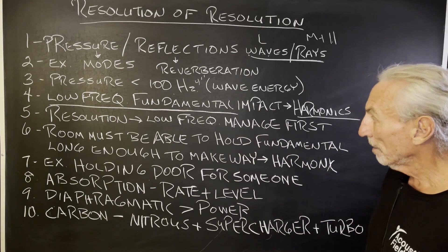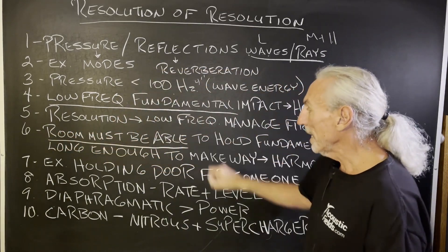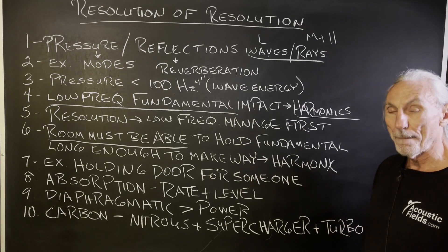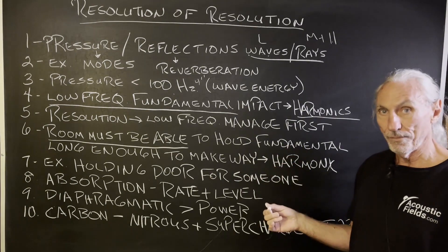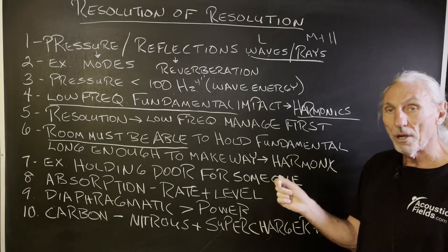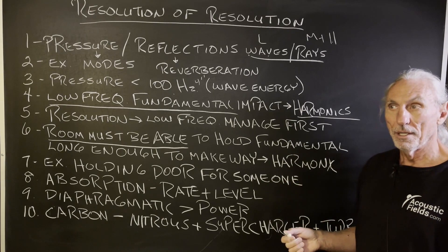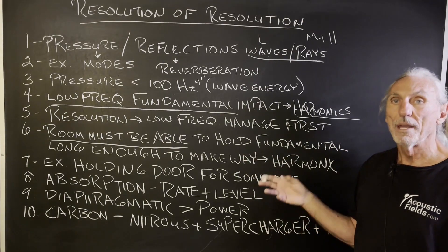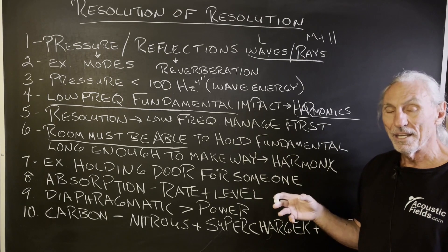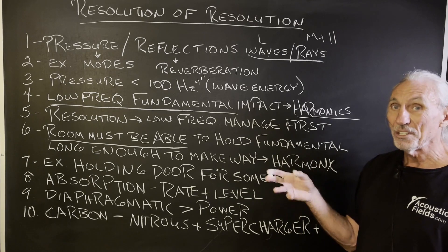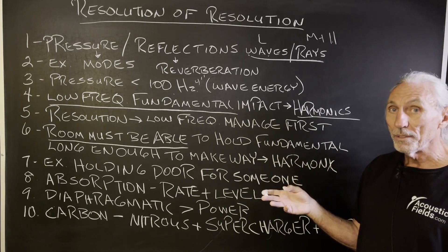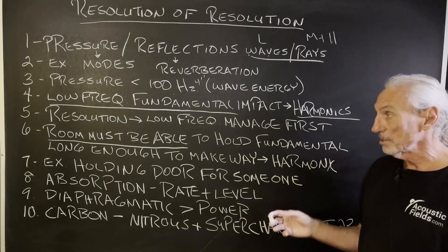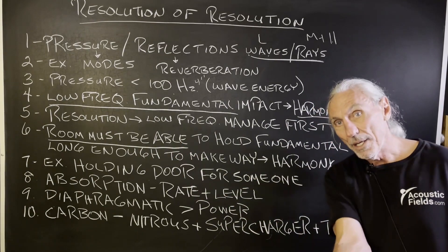The room must be able to hold the fundamental — the 30, 40, 50, 60 — long enough to make way for the harmonic. So many rooms, when 30, 40, 50, 60, 70 cycle energy gets dumped into them, it's like a car crash or explosion — they hold on to that energy for just a brief period of time, and then it produces distortion. The goal is to hold on to the fundamental as long as it can. The factors that contribute: the dimensions and the treatment. You fill a room full of foam, you have no low frequency management. You fill a room full of diaphragmatic absorption, you'll have a lot of low frequency management, and you need a lot in these small rooms. So we're holding the fundamental long enough so that the harmonic can be heard, because it's a little bit weaker.